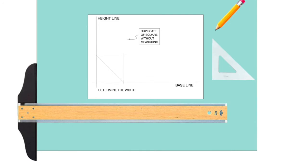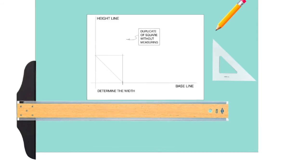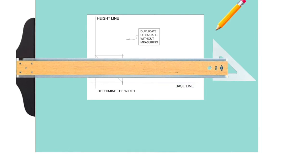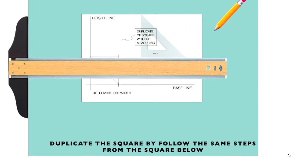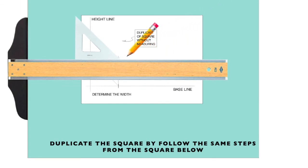Now we'll make a duplicate of the square, without measuring. All the same steps apply. We're going to use the 45-degree angle triangle, from the corner, transfer the measurement over to the height line.